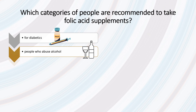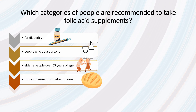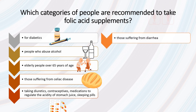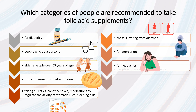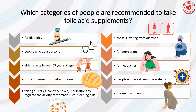Which category of people are recommended to take folic acid supplements? Diabetics, people who abuse alcohol, elderly people over 65 years of age, those suffering from celiac disease, those taking diuretics, contraceptives, medication to regulate acidity of the stomach, sleeping pills, those suffering from diarrhea, depression, headache, people with a weak immune system, and pregnant women.